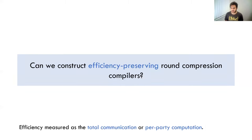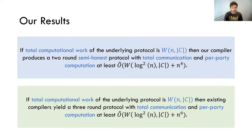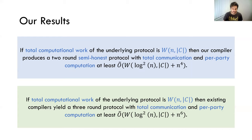Can we construct efficiency preserving round compression compilers? Here efficiency refers to total communication or per-party computation. We actually show positive results in this direction. In the semi-honest setting, we remove this multiplicative overhead and move it over as an additive overhead instead. As you can see, W doesn't depend on n anymore, but only polylogarithmically on n. And in the malicious setting, we get a three-round protocol with similar complexity for total communication and per-party computation, though the additive overhead is larger.